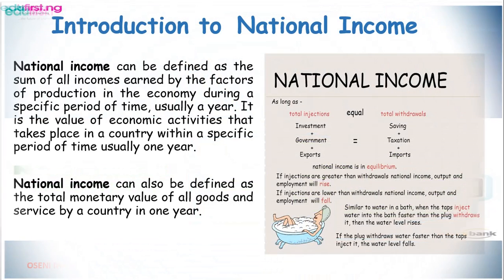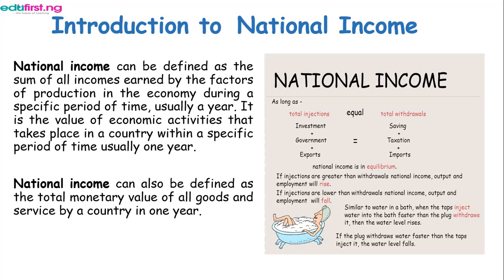What is national income? National income can be defined as the sum of all income earned by the factors of production in the economy during a specific period of time, usually a year. It is the value of economic activities that take place in a country within a specific period of time, usually one year. National income can also be defined as the total monetary value of all goods and services produced by a country in one year.